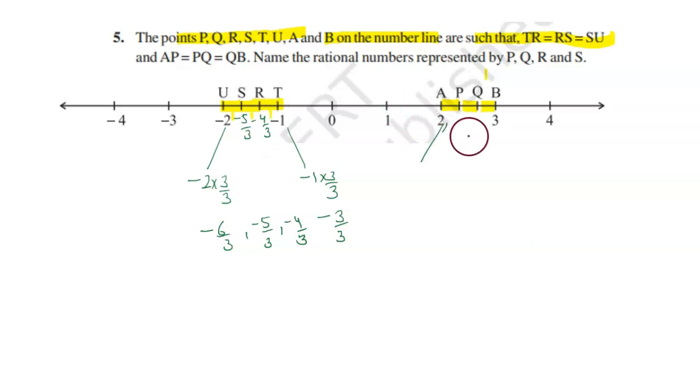Next, if we do the same with 2 and 3, multiply and divide by 3, we get 6 upon 3 and 9 upon 3. Between these we get 7 upon 3 and 8 upon 3.